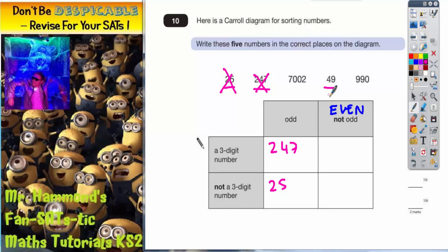The only other odd one we've got is 49. Now 49, is it a three digit number? No, it isn't. So it's not three digits. So 49 has to go down there. Cross it off.